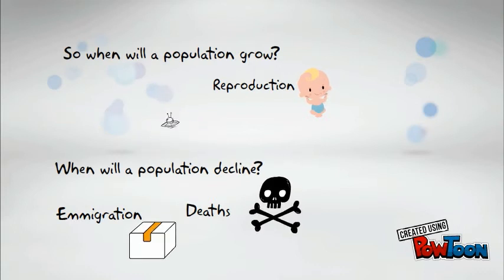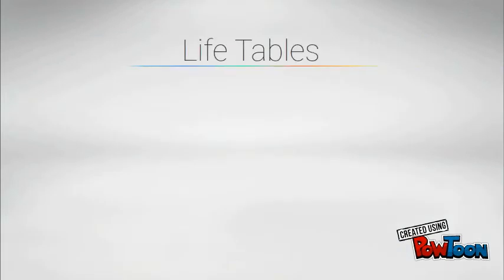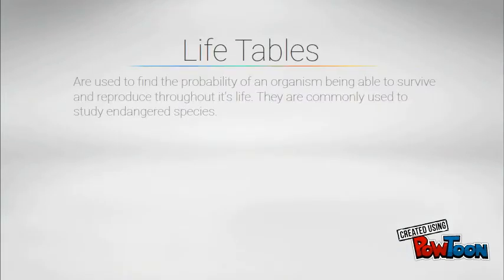Note the difference between immigration and emigration. The probability that any organism will survive and reproduce can be summed up through a life table, where a component of it is something called survivorship, which is the age to which a number of offspring survive to.